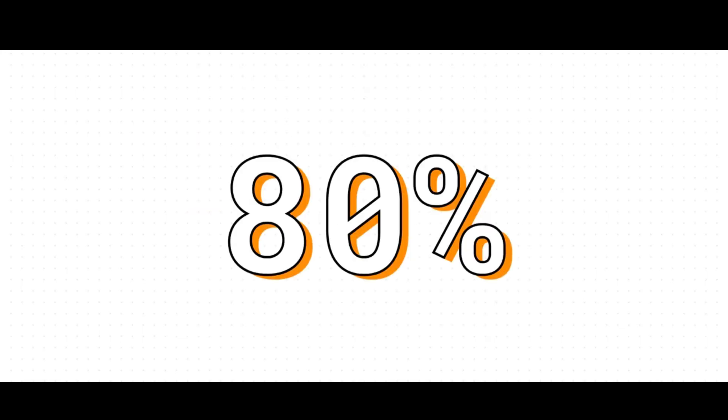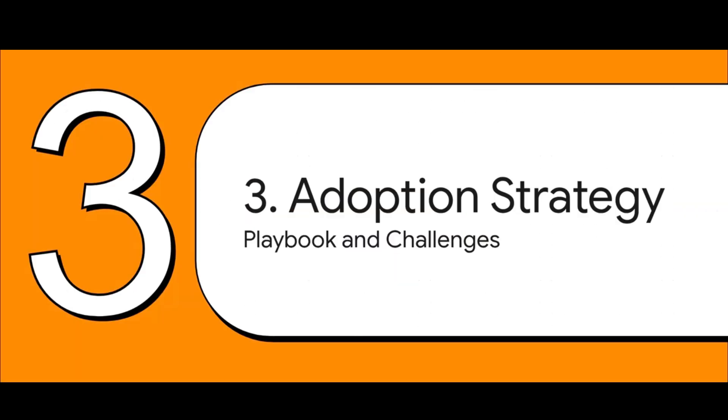And a huge piece of that quality puzzle is trust. With a reported 80% reduction in those weird errors or hallucinations, developers can finally have a lot more confidence in the code that GPT-5 is producing. That reliability, that's the key to real-world adoption and impact.